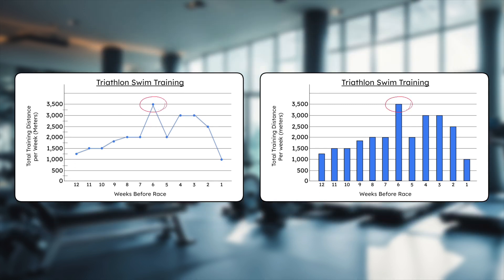The highest swim distance occurred six weeks before the race. After that, the distance dipped, rose slightly, and dropped again in the final weeks, with the lowest distance happening the week before the race. This shows us that athletes peaked around week six and gradually scaled back their training to rest and recover before race day. Because this single line graph shows the same data as the bar graph, we should notice the same pattern in the bar heights — and we do. Both graphs are useful tools for identifying training trends.